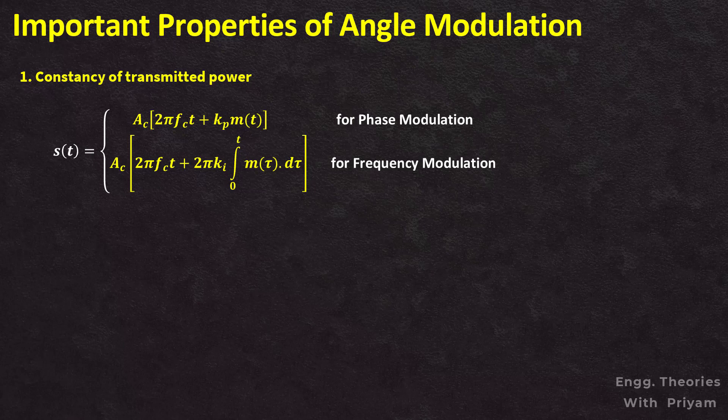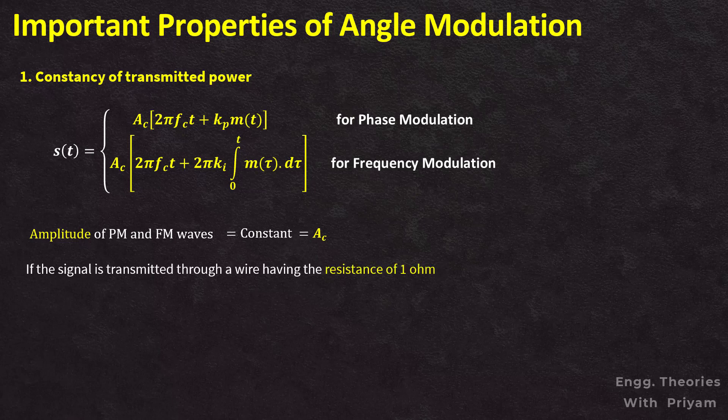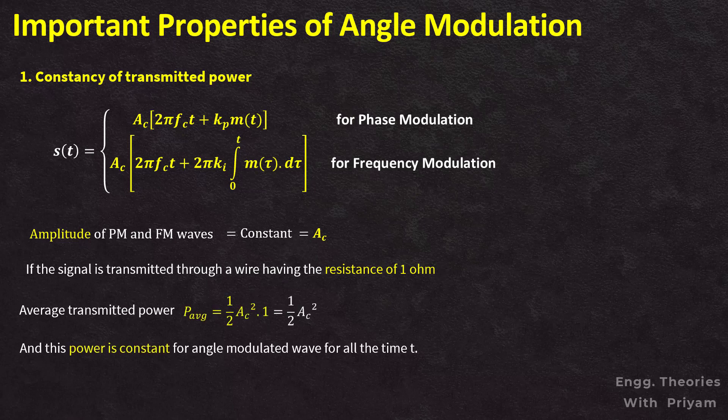For the frequency modulated signal, s(t) = Ac·cos(2πfc·t + 2π·ki·∫m(τ)dτ). The amplitude of both phase and frequency modulated signals is maintained at a constant value equal to the carrier amplitude Ac for all time t. If the signal is transmitted through a wire with a resistance of 1 ohm, then the average transmitted power P_avg = ½·Ac²·R = ½·Ac², which is constant for the angle modulated wave at all times.